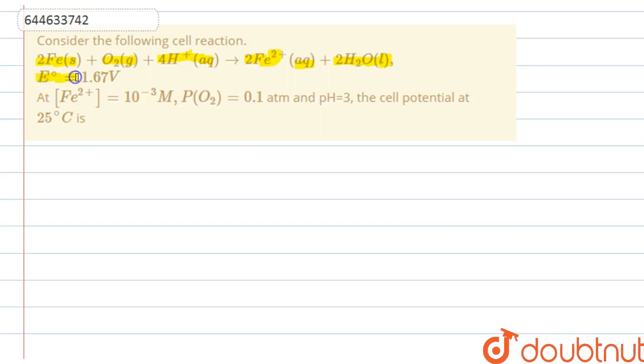E0 is given to us is 1.67V and the concentration of Fe2+ which is in the product side is given to us is 10 to the minus 3 molar and pressure of O2 is 0.18 atm. pH is given which is 3. The cell potential at 25 degrees Celsius is we have to find out.